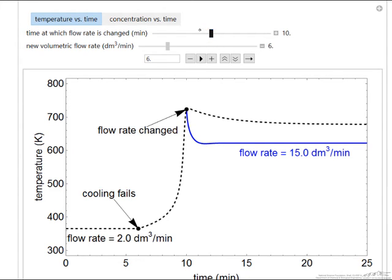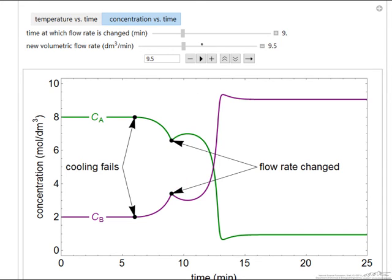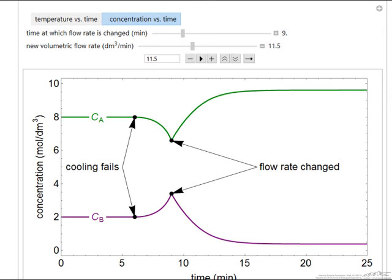Let's also look at the concentration versus time behavior. The system's at steady state—the concentration of reactant CA, the concentration of product. Cooling fails, the reaction's faster, so the reactant concentration decreases. We increase the flow rate and start to see an effect. Now we've increased the flow rate enough, we quench the reaction—we're not making any product, and we have our unreacted A leaving the reactor.